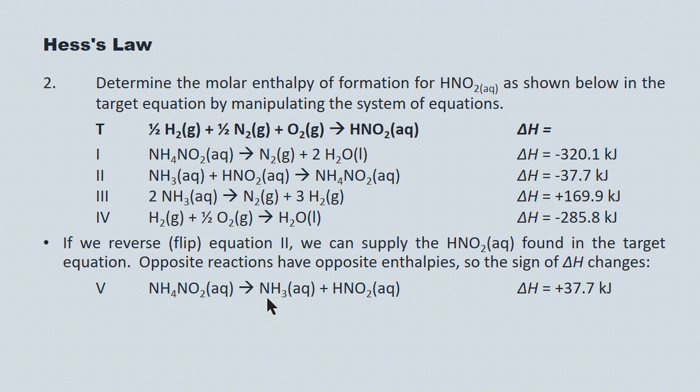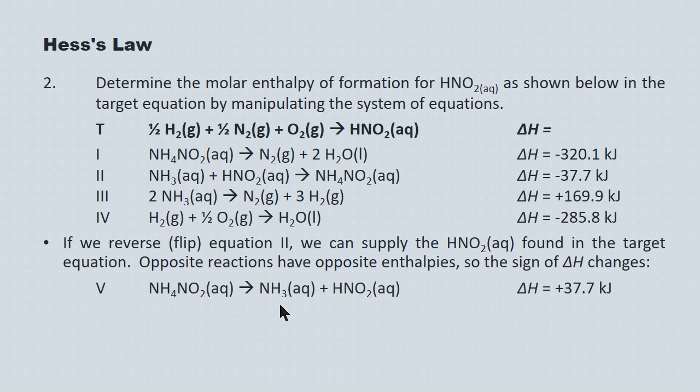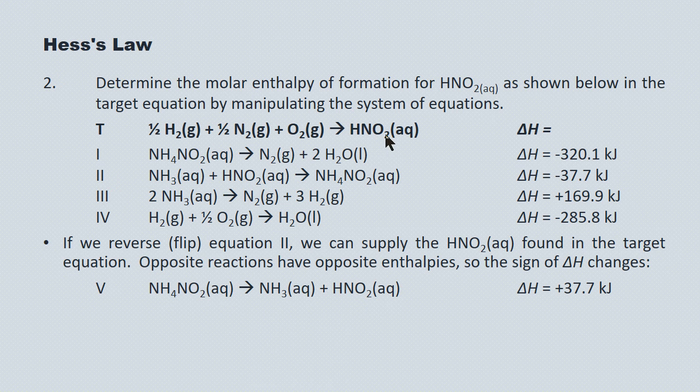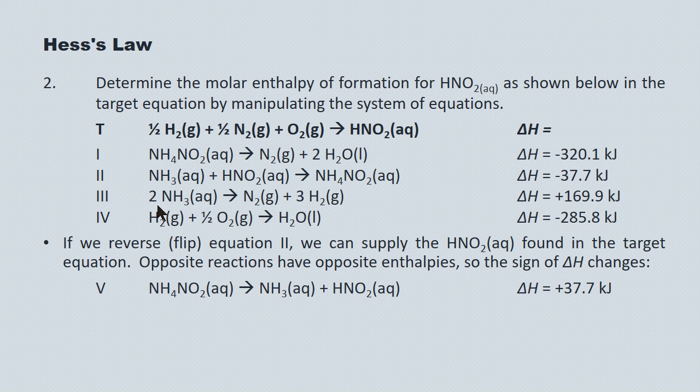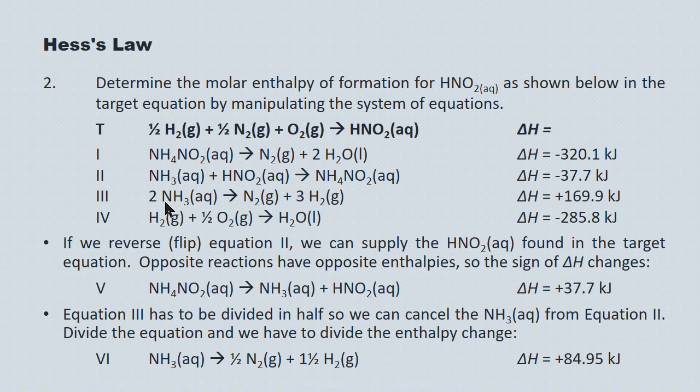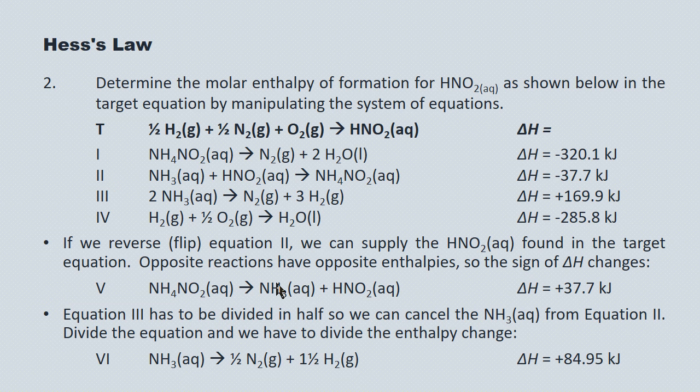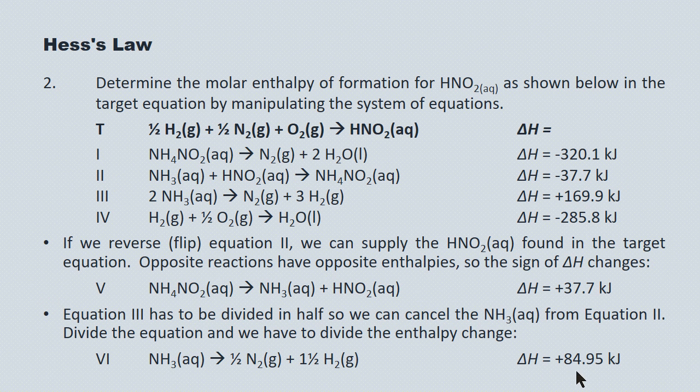Now, believe it or not, I actually want to deal with this ammonia that's not in the target equation, but it's in this manipulated equation. I want to deal with it by getting rid of it. Because, in point of fact, there is no ammonia in the target equation. So I need to manipulate one of the other equations to eliminate this ammonia. The only other place that ammonia shows up is equation 3. And you'll see equation 3 consumes 2 moles of ammonia. Now, I'm only obligated to eliminate 1 mole of ammonia. So equation 3 must be divided by 2, like this. We divide equation 3 by 2, and you'll see that the ammonia will now cancel out as a reactant and a product when we add up the system of equations. We divide the equation by 2, of course, and we have to divide the enthalpy by 2. Positive 169.9 becomes positive 84.95.